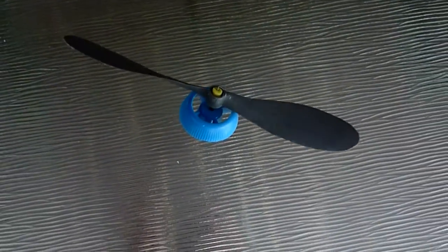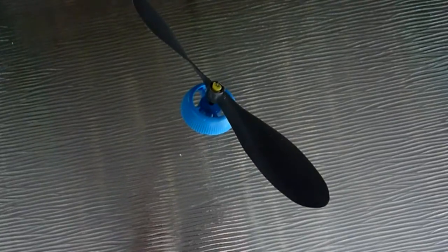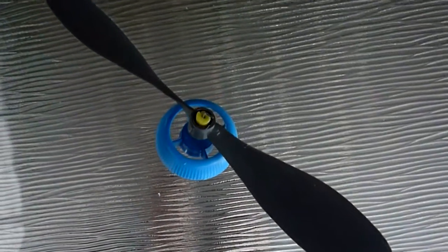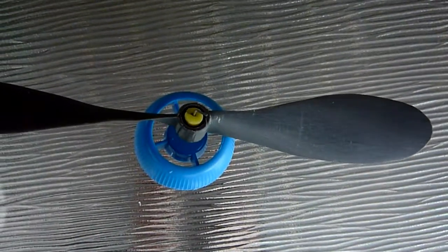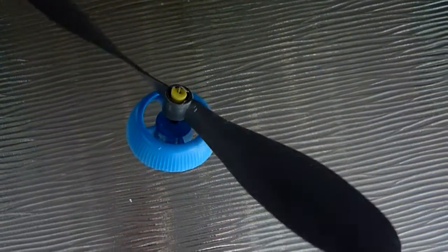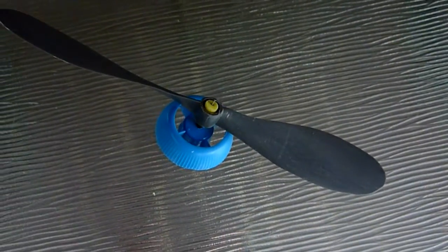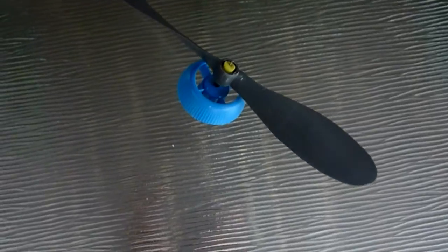This is a propeller mount for a rubber band powered airplane. It looks like a radial engine and it's made for a hollow fuselage. The rubber band goes inside the fuselage.